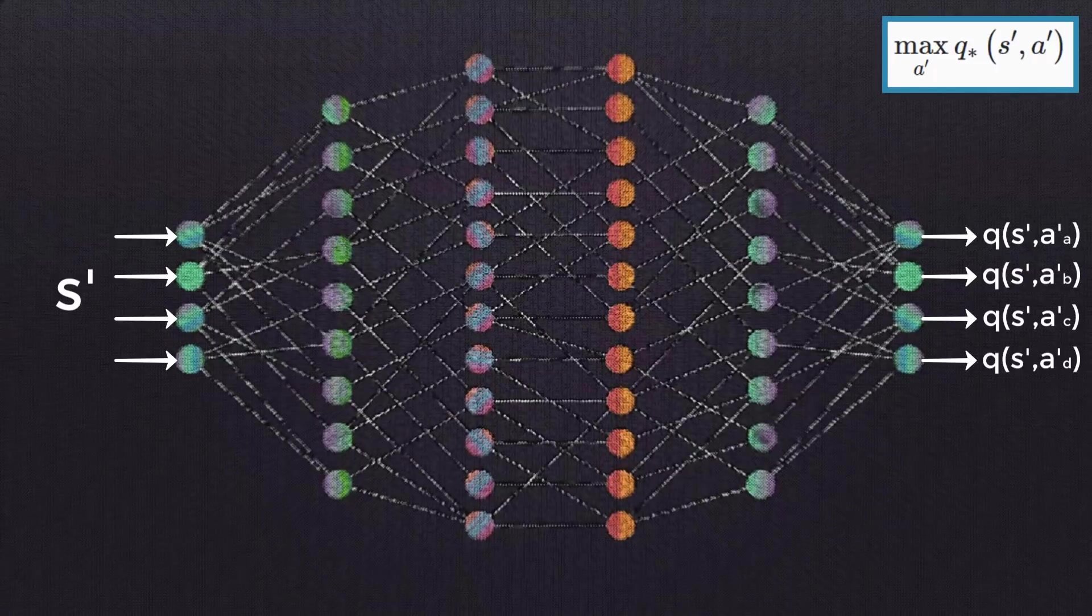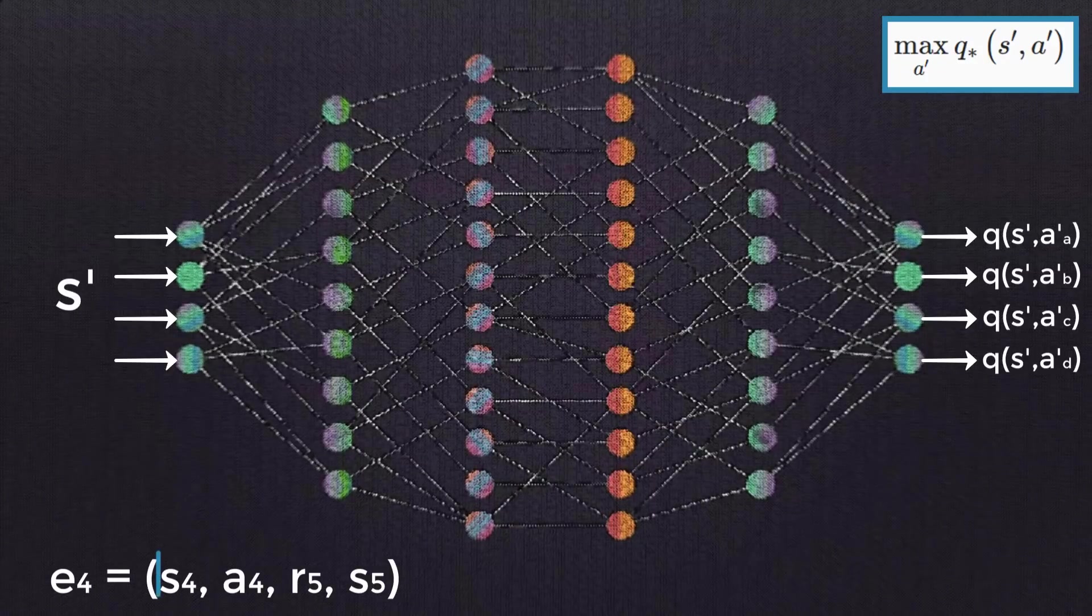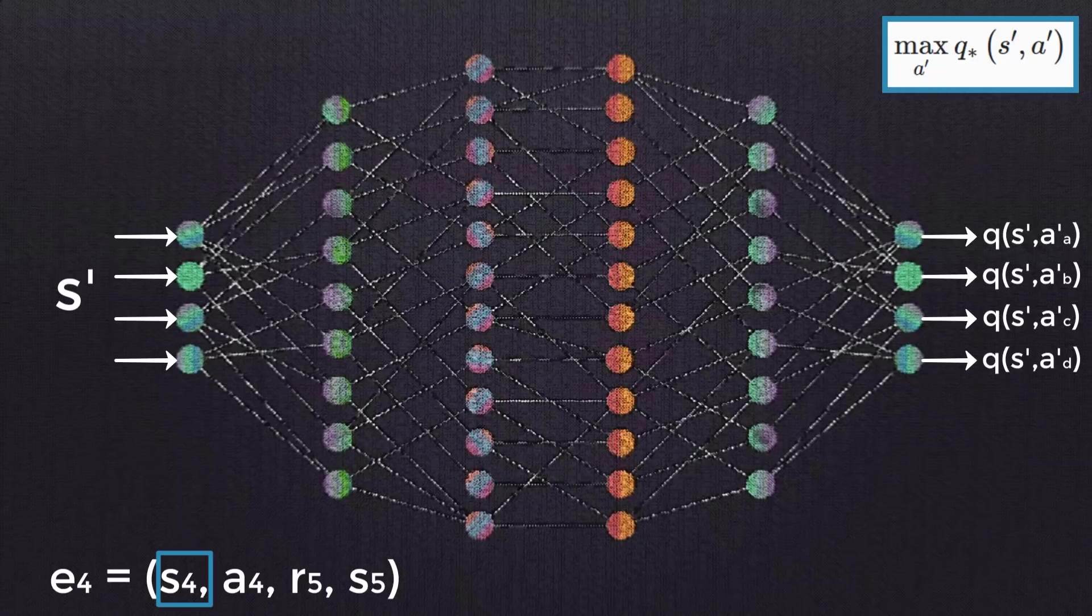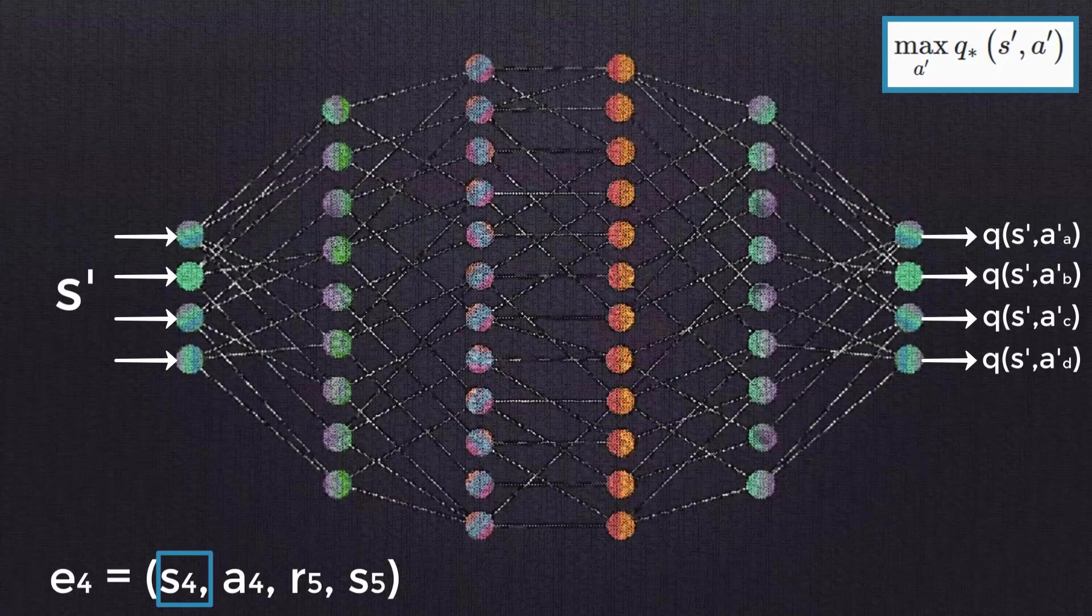Note that, for our specific example, we're working with experience tuple E4, so our initial state that we passed to the network was S4. The general S prime and A prime notation, then, would take on S5 and A5 as the next state and action.